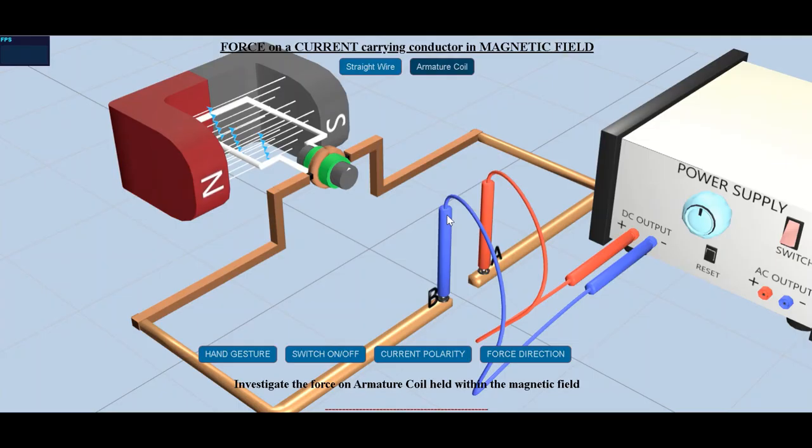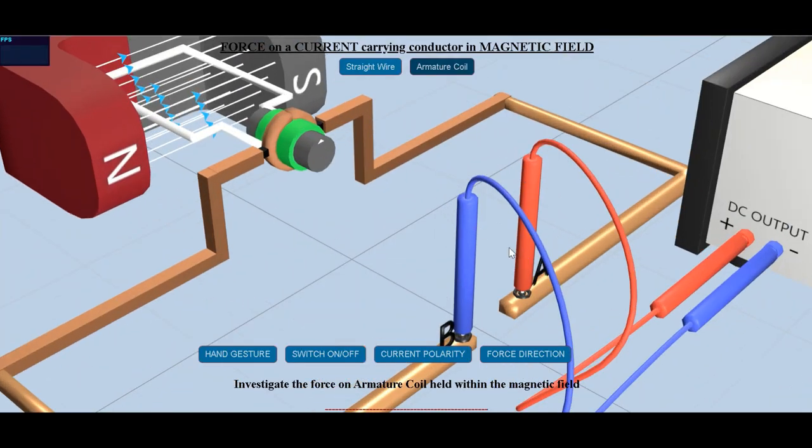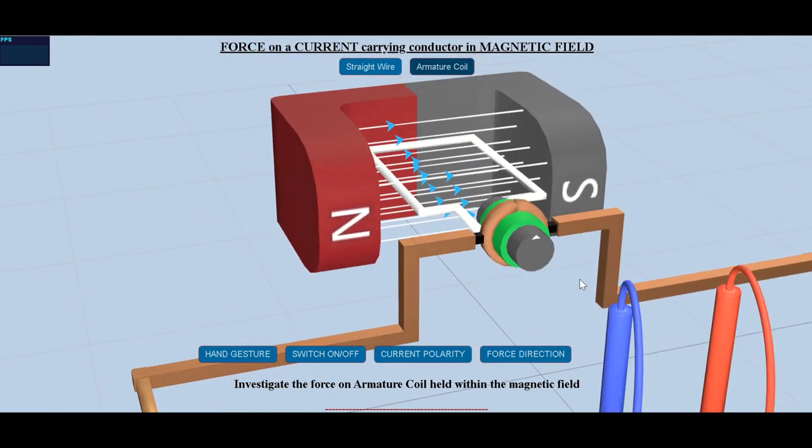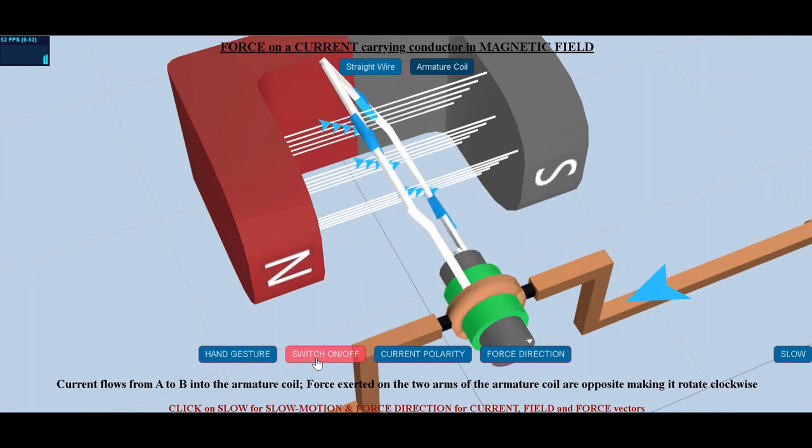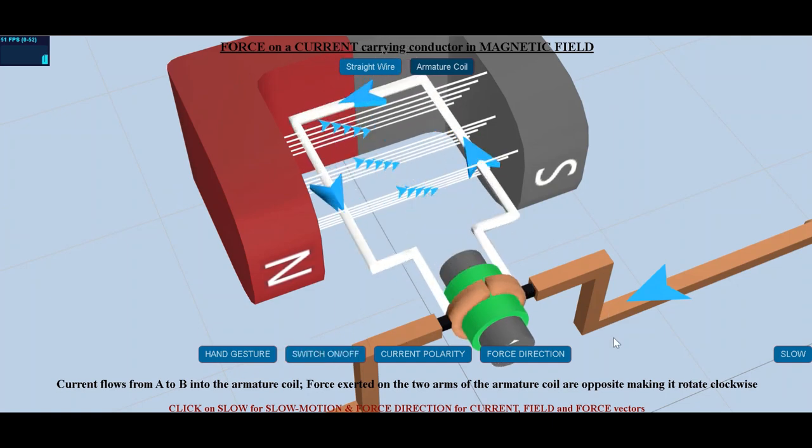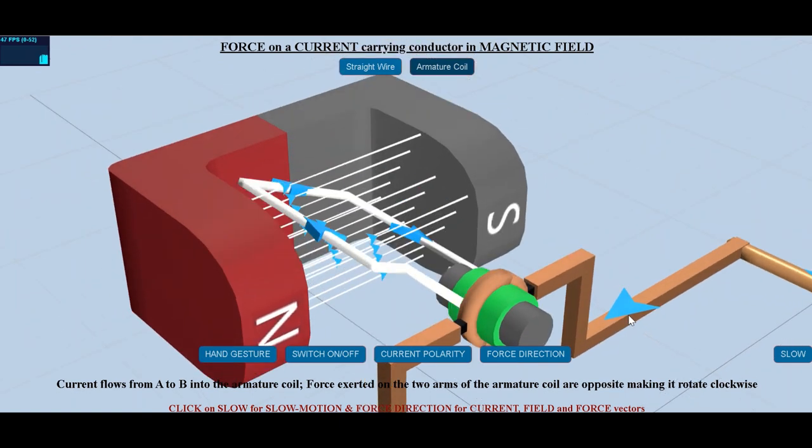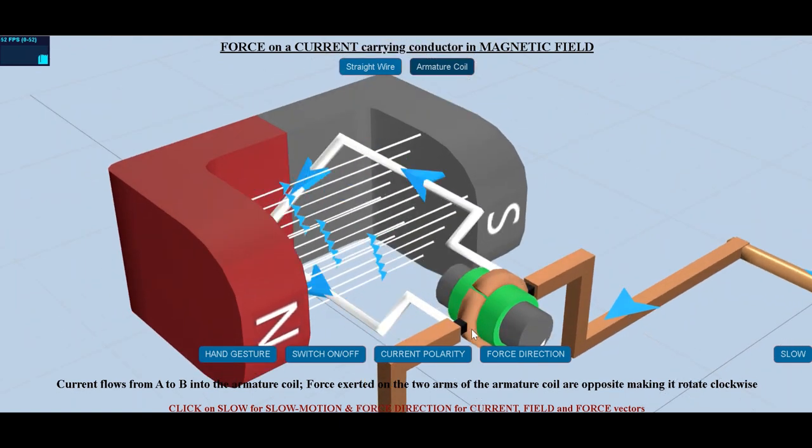Electric current is fed into the split rings or the commutator through a pair of loose connectors called brushes made of soft carbon material. Notice that each time the coil rotates through half a turn, the commutator maintains a steady flow of current in the same direction through the coil.